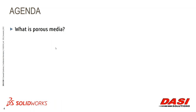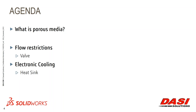The first thing we're going to talk about briefly is what porous media is, and then we'll move into some examples where I'll use porous media to simplify a valve - it can work across a lot of different flow restrictions. Then I'll look at an electronic cooling example, specifically a heat sink, and also an HVAC example where I'll use porous media to simplify an entire air conditioning unit.